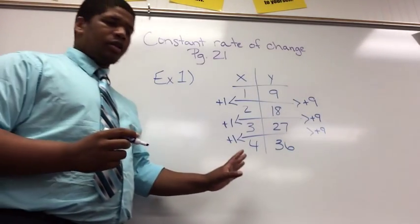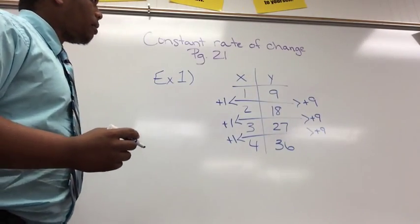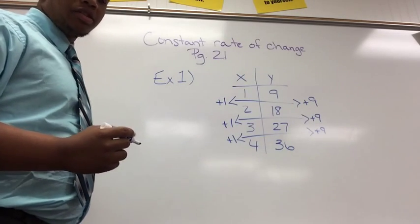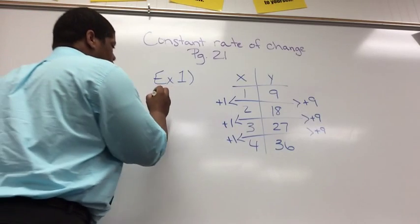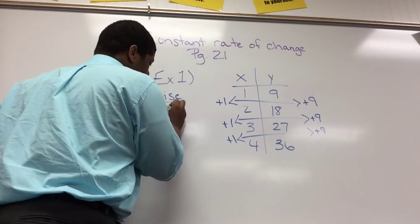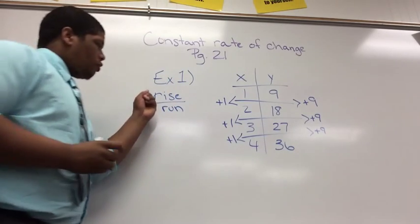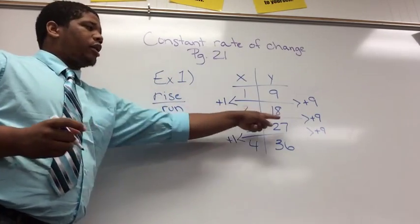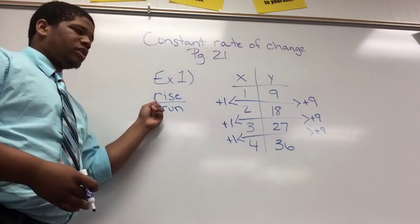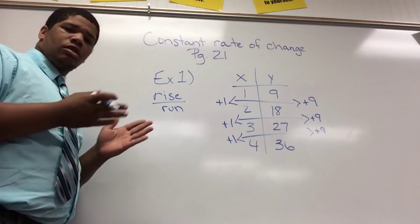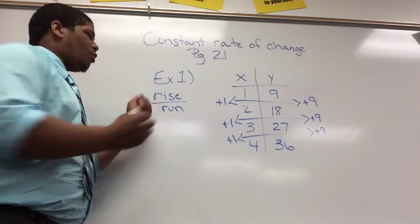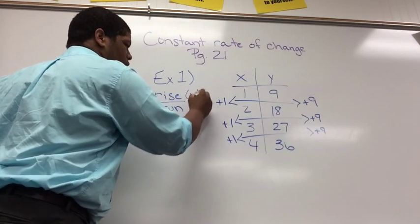So now I'm going to look at this, and my equation that I'm going to use in my formula for my constant rate of change is rise over run. Rise is my y-coordinates because the y-axis goes up and down. And run is my x-coordinates because the x-axis goes left and right.